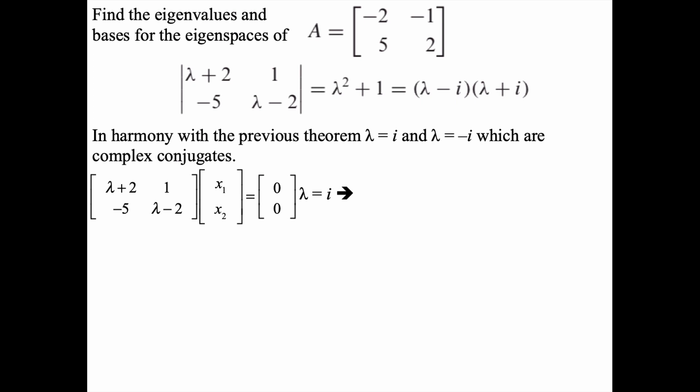When we set up a homogeneous linear system, we could use either eigenvalue to start. I chose lambda equals i, and when I put i into this structure, we get this system.